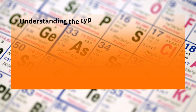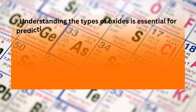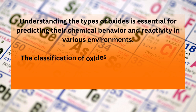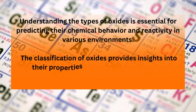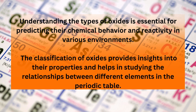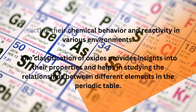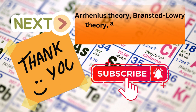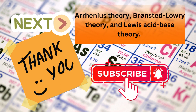Understanding the types of oxides is essential for predicting their chemical behavior and reactivity in various environments. The classification of oxides provides insights into their properties and helps in studying the relationships between different elements and the periodic table. Next topic: Arrhenius theory, Brønsted-Lowry theory, and Lewis acid-base theory.